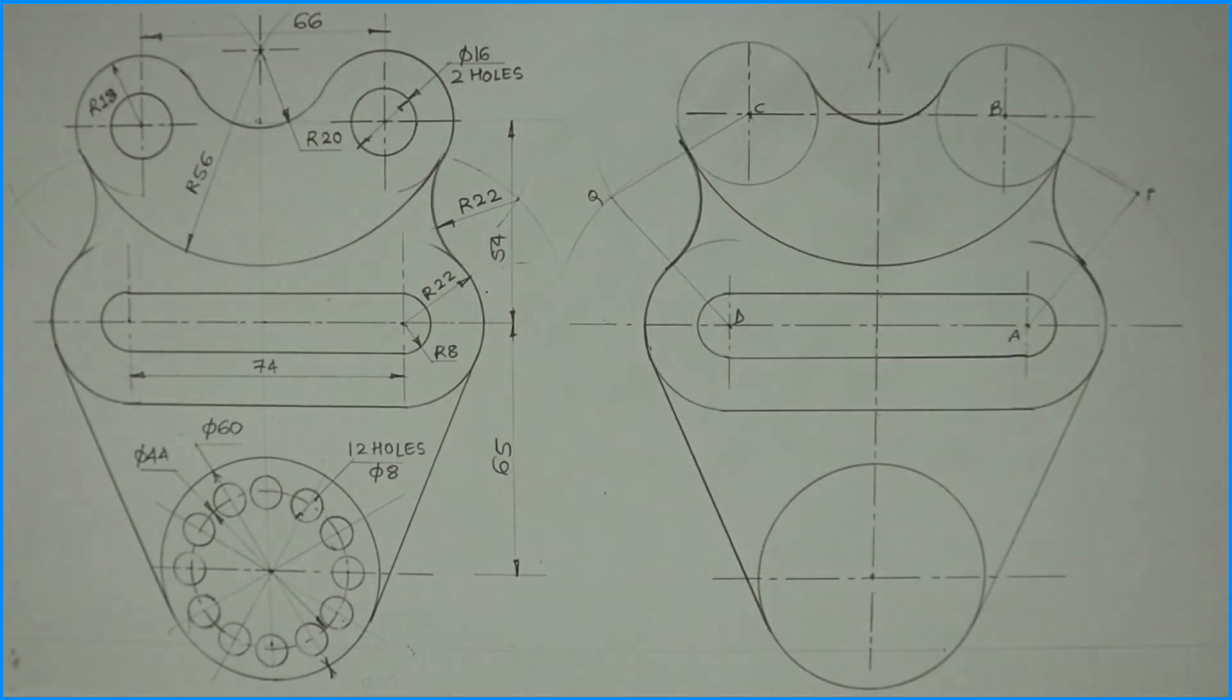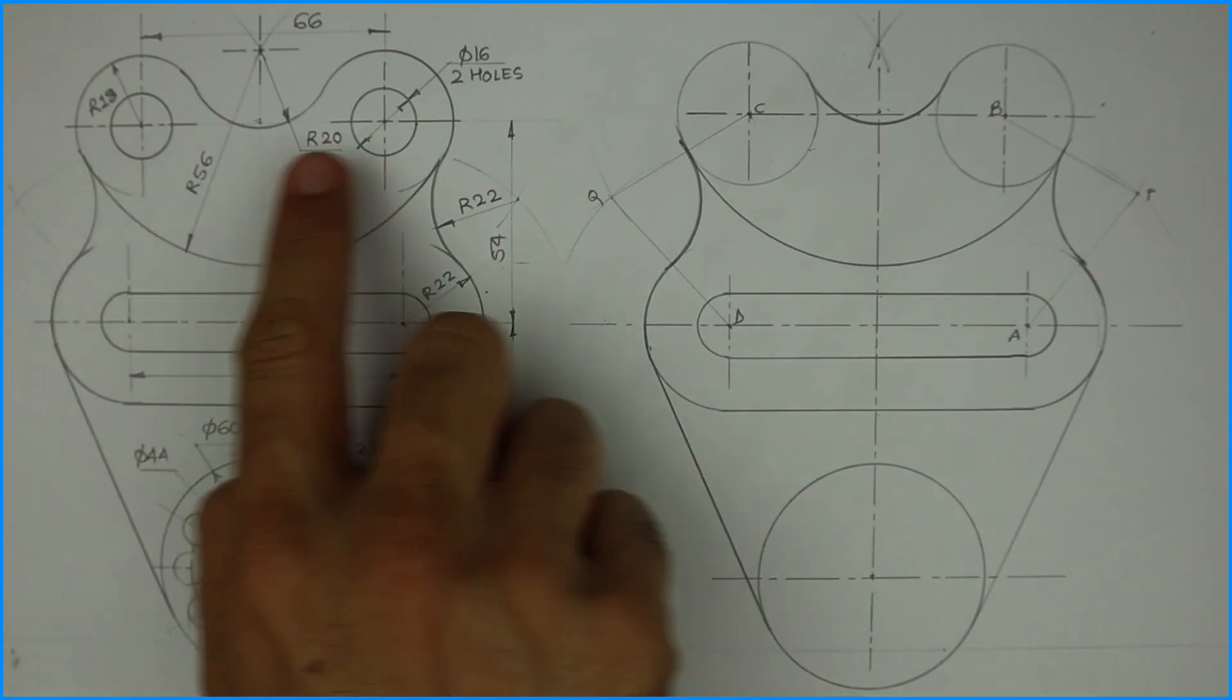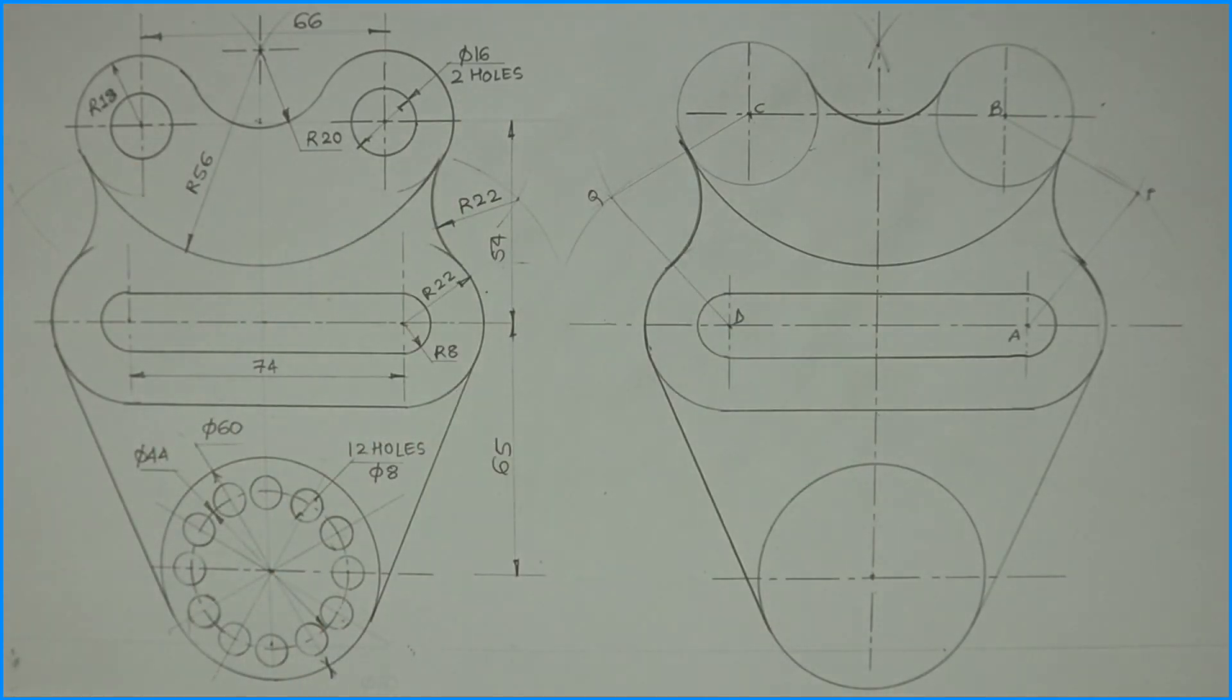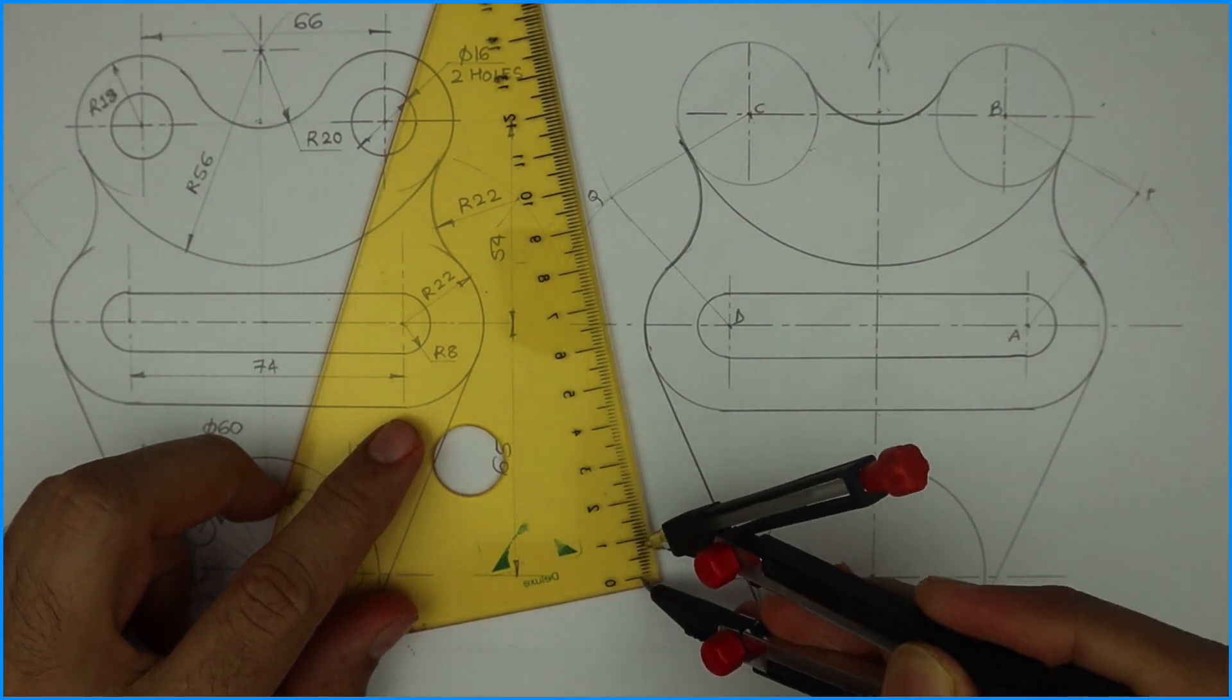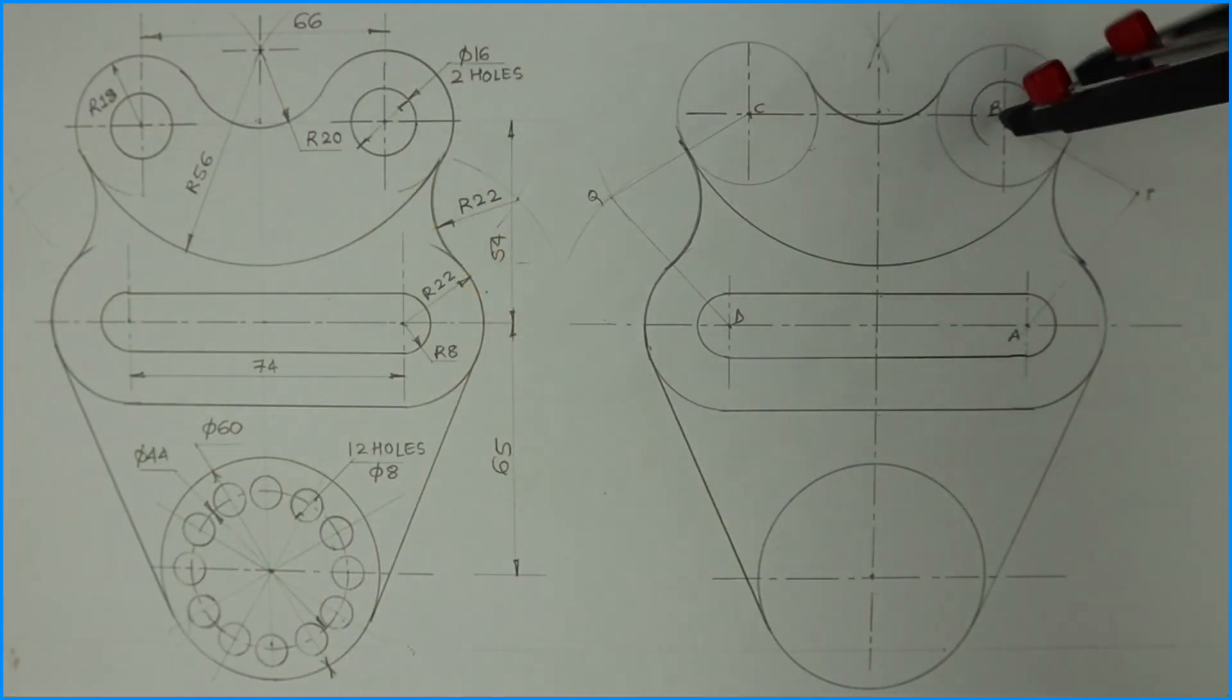Now you can darken the remaining part. Now what is left, these two circles of diameter 16, so you take radius 8 and draw a circle.